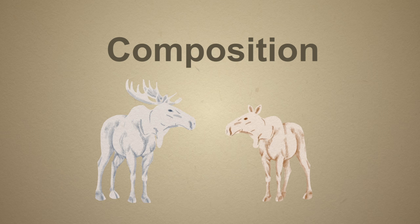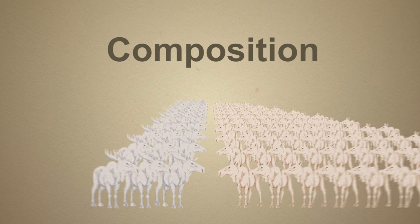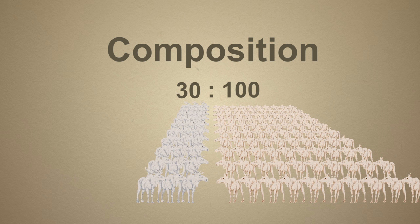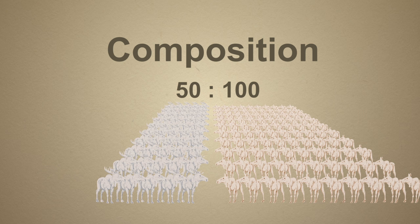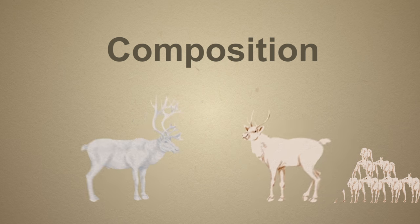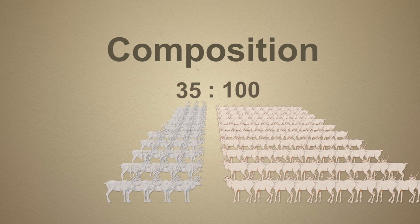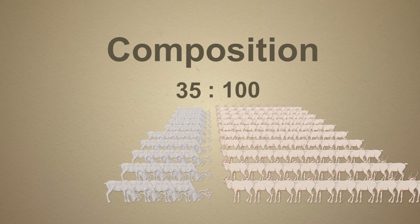For moose, we try to maintain a minimum of 30 bulls to 100 cows in areas with higher density populations, and 50 bulls to 100 cows for low density populations. For caribou, a ratio of at least 35 bulls to 100 cows is considered sustainable.